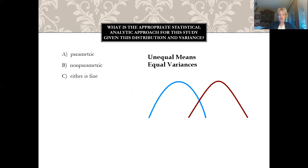Here's a quiz question: what is the appropriate statistical analytic approach for this study, given the distribution and the variance? You have unequal means but equal variance. Because you have a normal distribution and equal variance, you can use parametric.